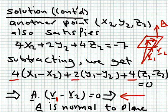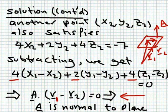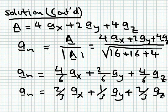So vector A, which has components (4, 2, 4), must be normal to the vector R1 - R2. Since R1 and R2 can be any two arbitrary points in the plane, A is normal to every line in the plane — so it must be the normal to the plane. This means the direction of the normal to the plane is given by 4Ax + 2Ay + 4Az. To get the unit normal from vector A, we divide A by its magnitude.